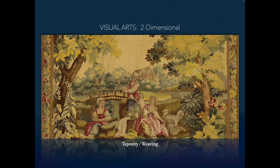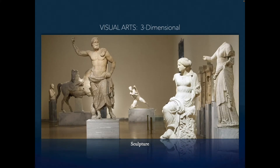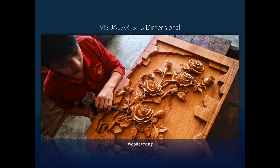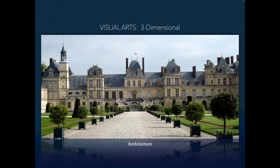Next we get into three-dimensional art. Obviously sculpture - this is what's called in the round, where you can walk around it and see all sides. Still three-dimensional but a little more 2D is wood carving - you can only see it from one vantage point but it still sticks out. And then we have architecture, which can be considered art, though sometimes it's not - we'll get into those distinctions later.